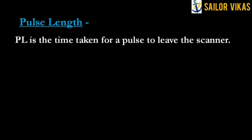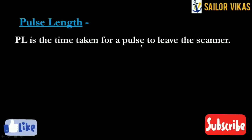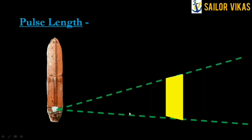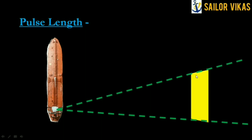Pulse length is the time taken for a pulse to leave the scanner. Here I will show you one example from a bird's eye view. I am watching the horizontal beam width, which has the 50 percent intensity as indicated by the green lines. Now I am transmitting a pulse — this yellow color is the pulse, you can see it traveling. In this diagram I am going to highlight what pulse length is.